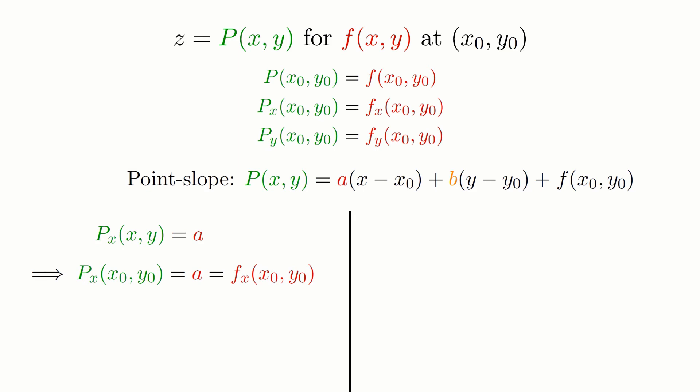One down, one to go. And really, we're pretty much home free at this point, as solving for b is almost the exact same process. If we look at our final derivative requirement, we need to take the y partial derivative of our p function. In this case, everything that's not a pure y cancels away, and so we get, similar to before, that the partial of p in y at x comma y is equal to b. And since the y partial of p must match the y partial of f, we have that b equals the y partial of f at x0 comma y0.